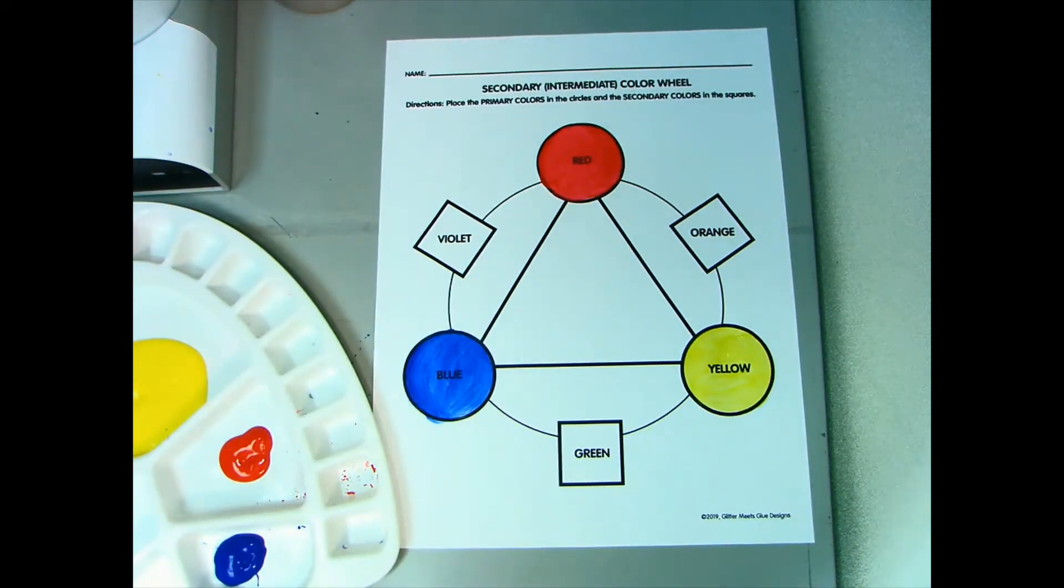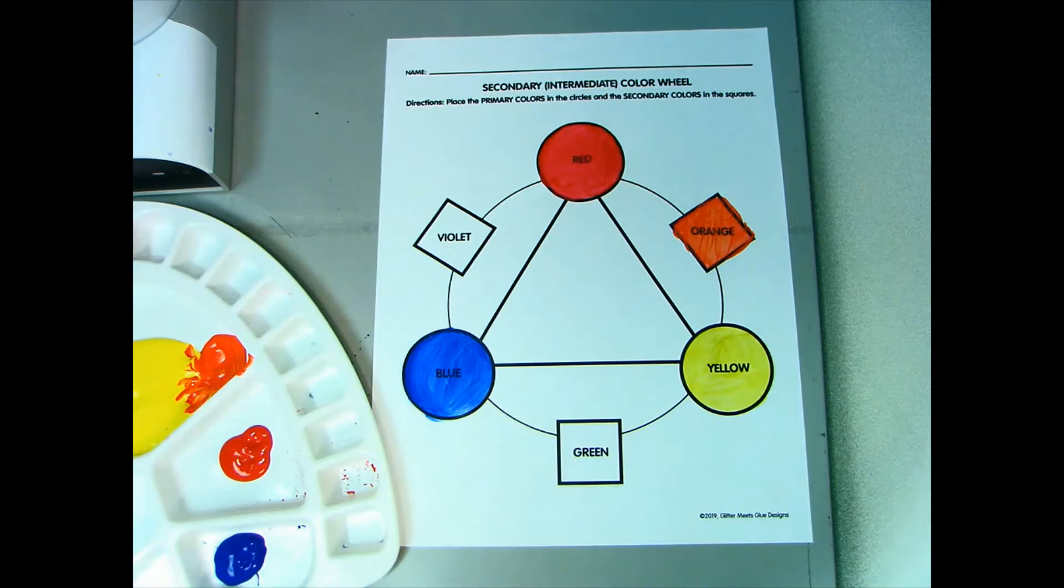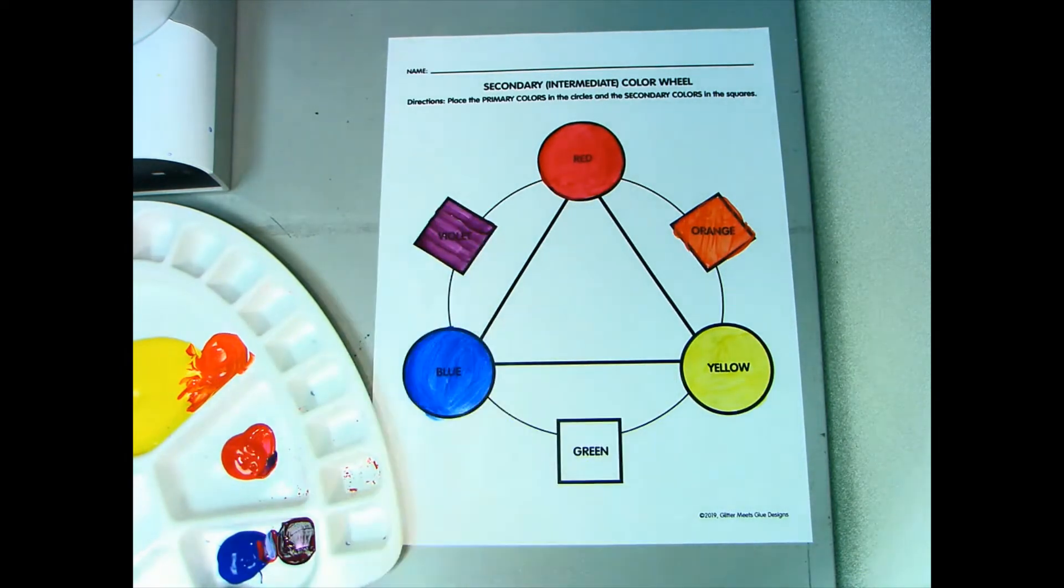From these colors, we can make secondary colors. Red and yellow make orange. Red and blue make violet. And blue and yellow make green.